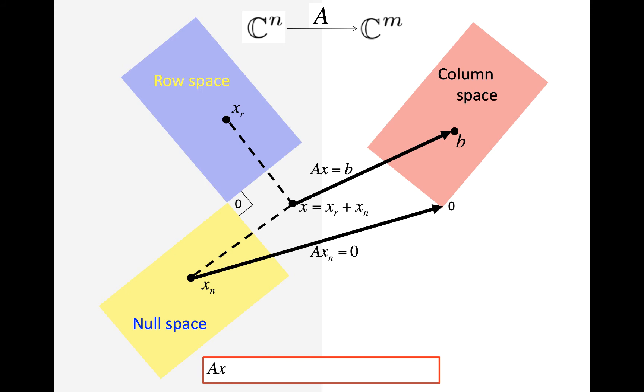So if we look at Ax, then we see that that's A times x_r plus x_n. And that means that it's A times x_r plus A times x_n. And we know that A times x_n is 0, so we get that it's equal to Ax_r. So what that really means is that that vector in the row space maps to vector b when we apply A to it.